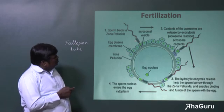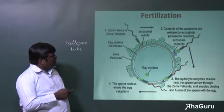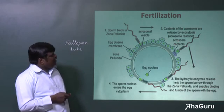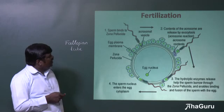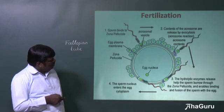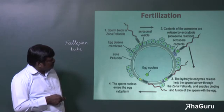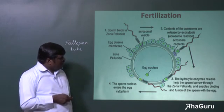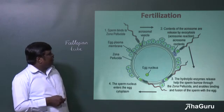A sperm binds with the outer membrane called the zona pellucida. The tip of the sperm has a structure called the acrosome, which contains a hydrolytic enzyme. With the help of those hydrolytic enzymes, the acrosome dissolves the membrane, and slowly the release of the nucleus takes place. The nucleus is released inside the cytoplasm of the ovum, where the male nuclei fuses with the egg nuclei, and they develop into a zygote.